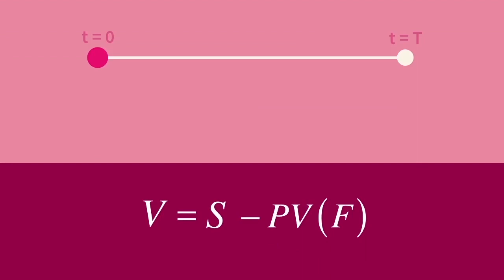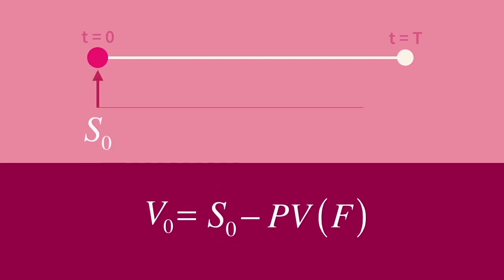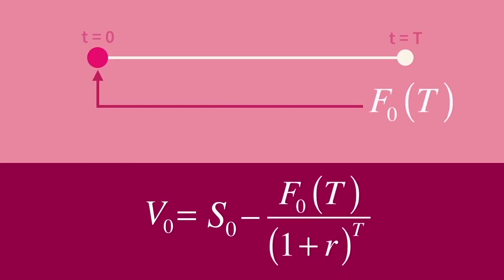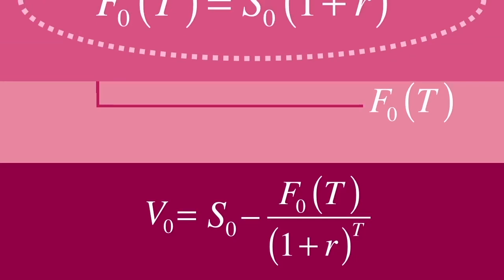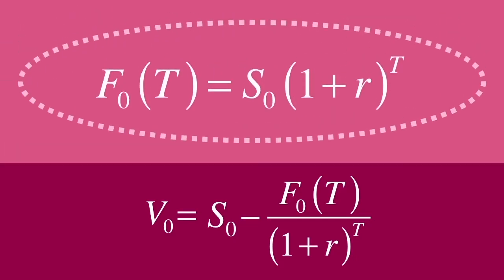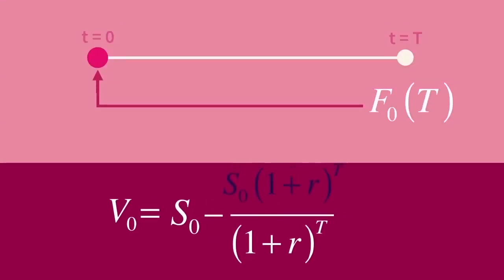We have the present value of the forward price discounted using the risk-free rate. But remember the equation from earlier relating the forward price and the spot price at initiation — plugging that in, we end up with a value of zero. This is key: all forward contracts have zero value at initiation. No money is exchanged between two parties entering into a forward contract because on the initiation date the contract represents no value to either party. It's a bet that during its life, the contract will come to some value.